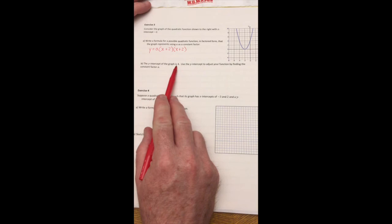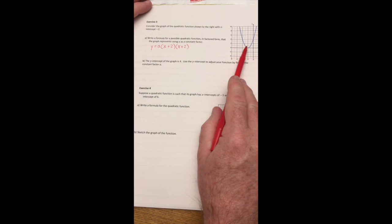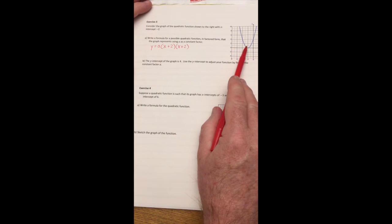Part B says use the Y intercept of the graph to find what A is. So that's going to be part of your assignment to finish doing that one. So you have to solve for A and get the equation for this quadratic. And then exercise 4 is the last part of your homework as well. And that's running through with both X intercepts and the Y intercepts. Write the formula and graph it on your paper. Good luck.